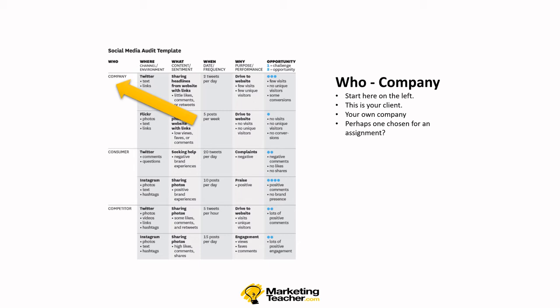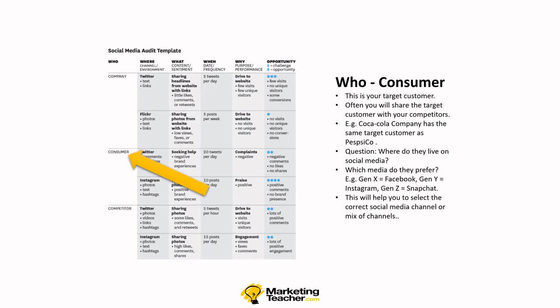You'll have more than one competitor. For Who — your company — start on the left; this is your client or your own company, perhaps one chosen for an assignment. Then we move to Who — the consumer, your target customer. Often you'll share the target customer with your competitors; for example, Coca-Cola has the same target customer as PepsiCo within boundaries. The question you ask is: where do they live on social media? Do they use Facebook, TikTok? Which media do they prefer? This changes based on generation — Gen X for Facebook, Gen Y for Instagram, Gen Z for Snapchat, generally speaking. This will help you select the correct social media channel or mix of channels.